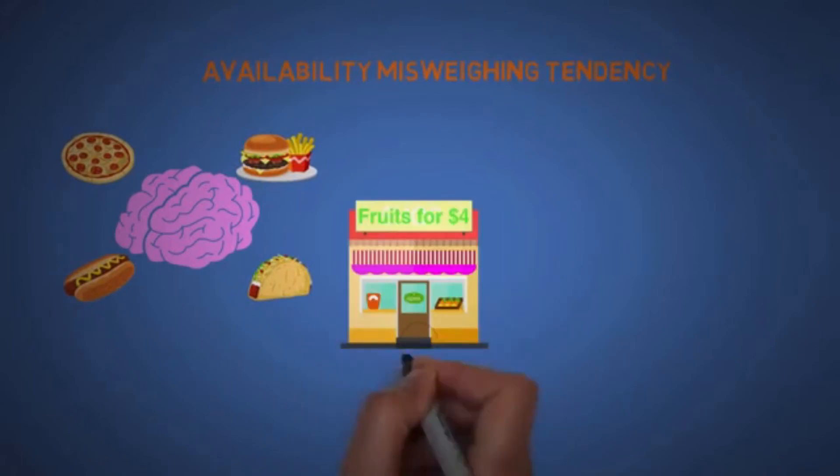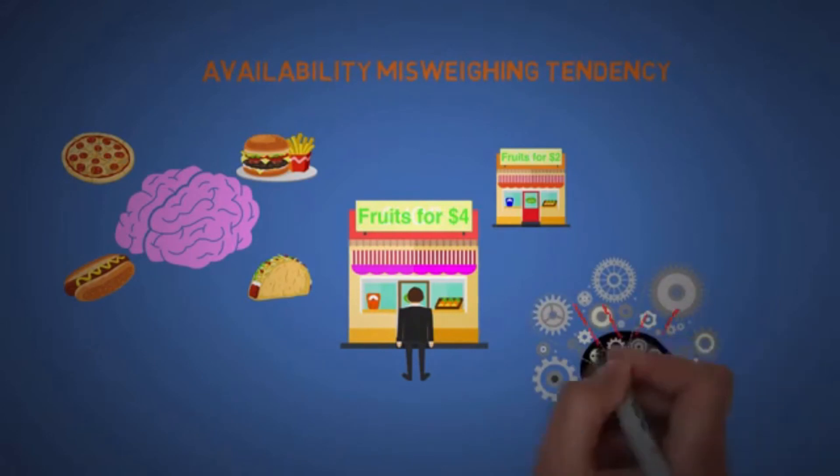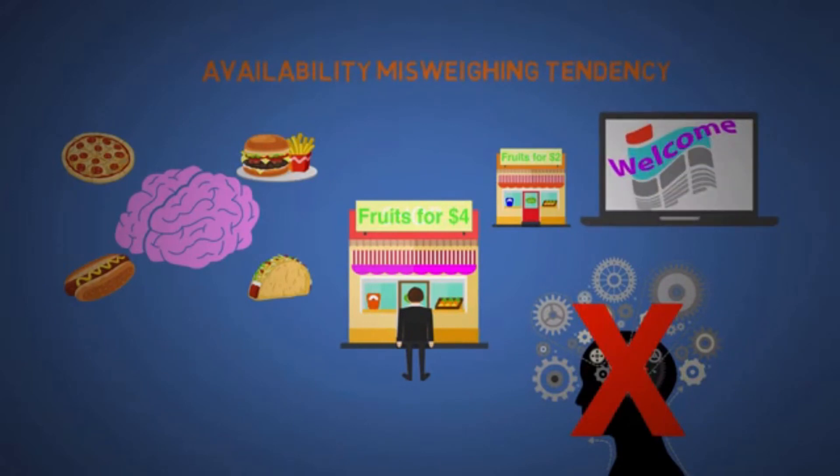The eighteenth is availability misweighing tendency. The mind works with what is easily available to it, like fast food. We might buy things that's available right in front of us even if there's something much cheaper somewhere else. This is why we have instincts, so the mind doesn't have to work as hard figuring stuff out. So if you got a confusing website or advertisement, then good luck.